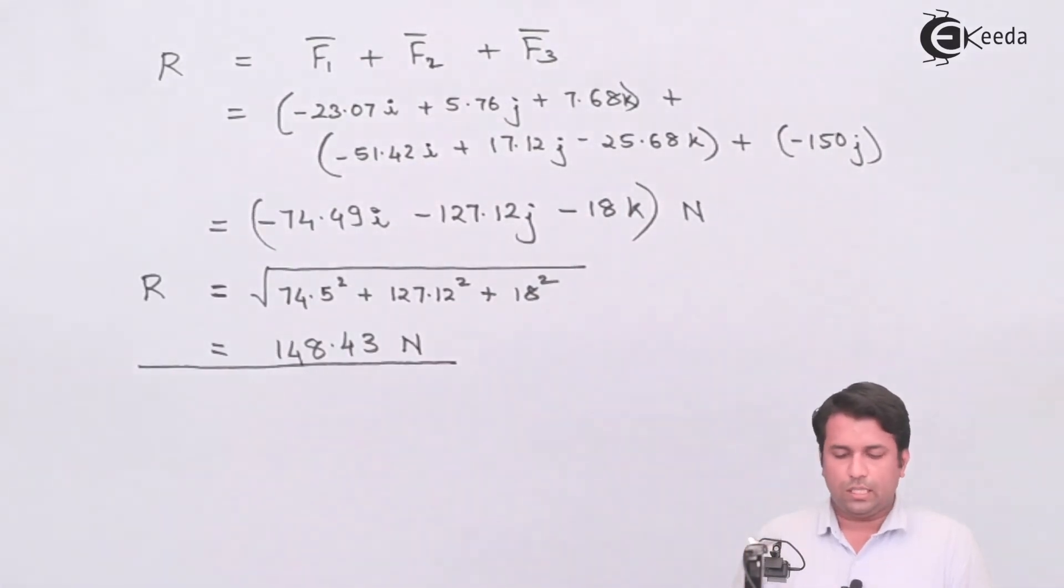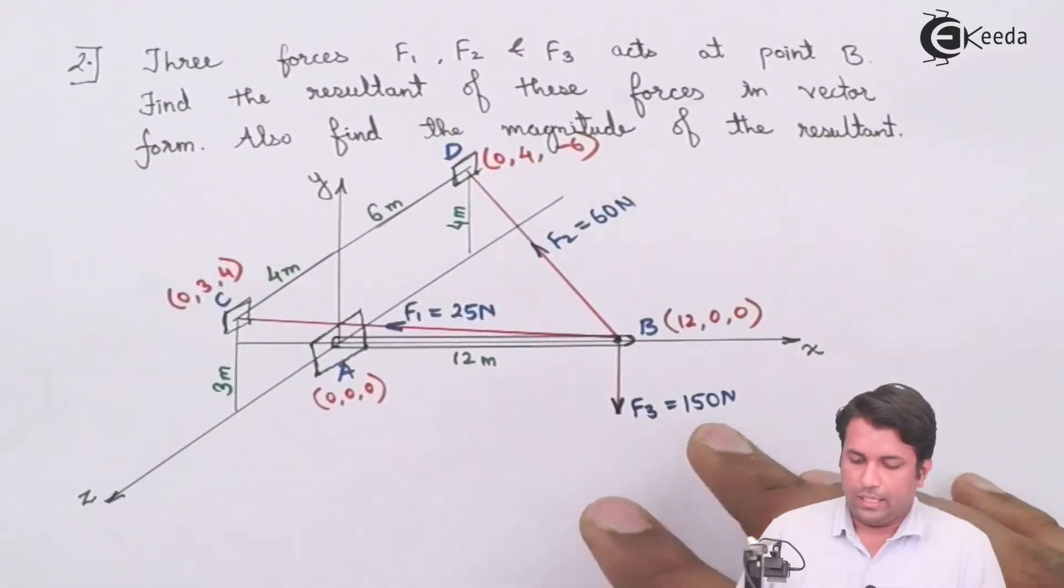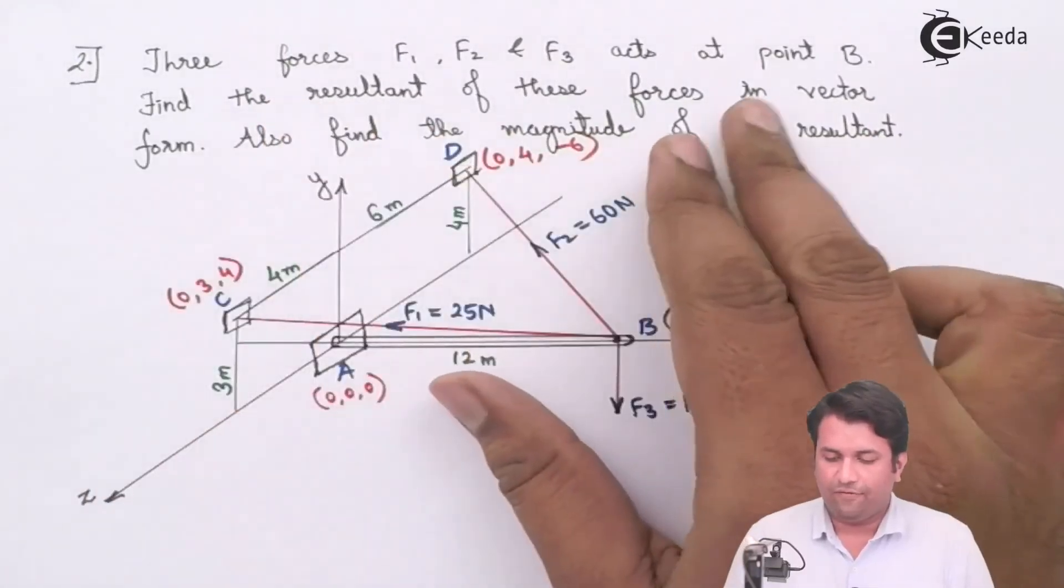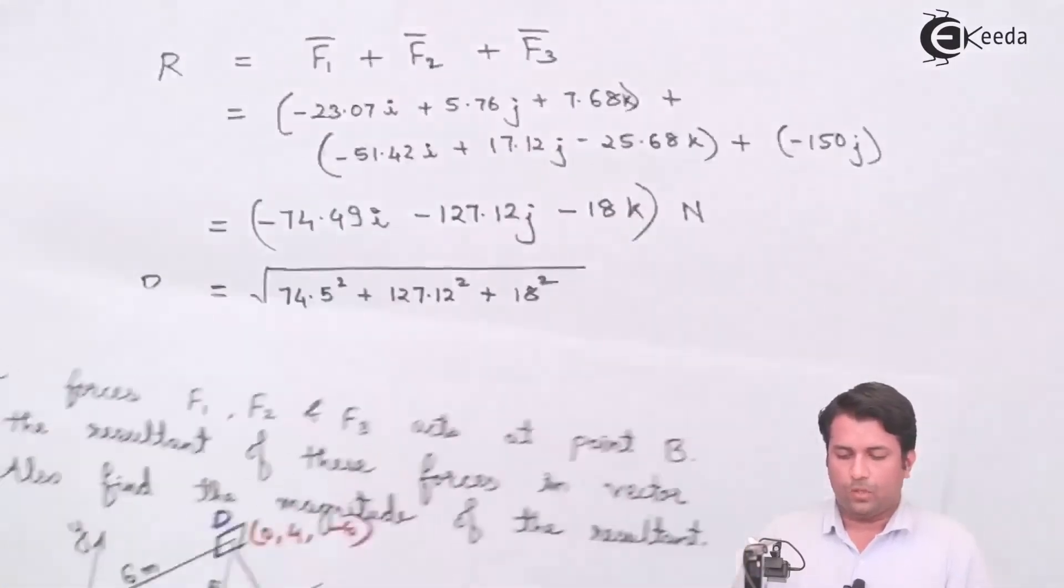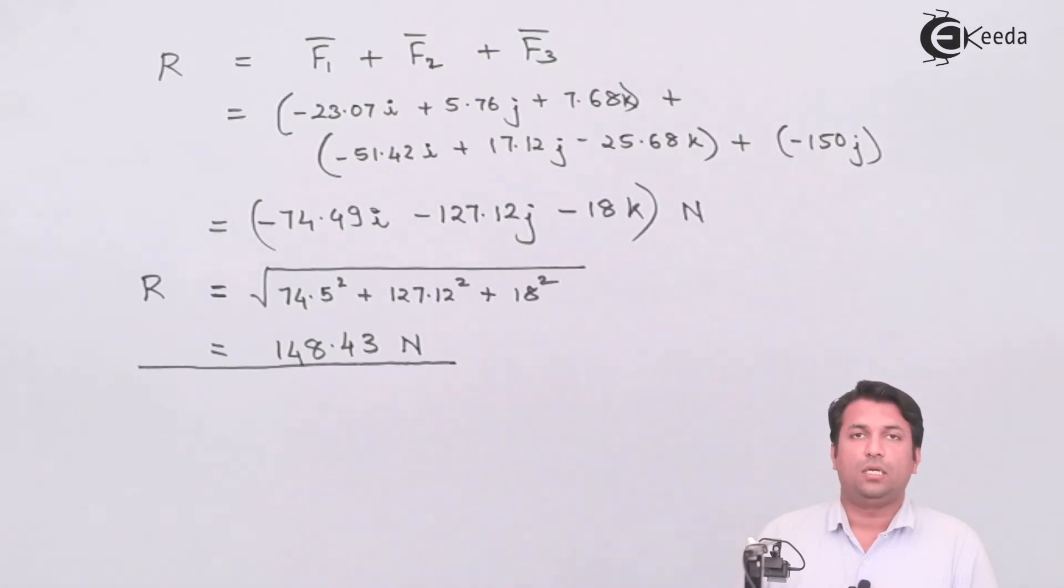So this is how I have calculated the resultant for the given force system. It was asking me to find the magnitude as well as the force in vector form. I have got the resultant in vector form and the magnitude as well. I hope you have understood this example, thank you.